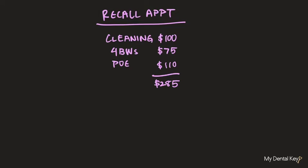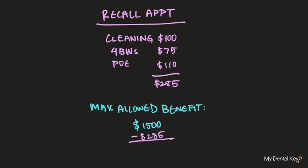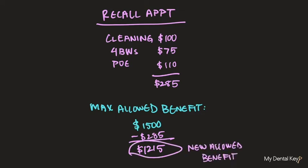These prices come from the prices that the insurance sets in their contract with an office. This $285 will then be subtracted from the maximum allowed benefit of $1,500, leaving that patient with $1,215 left on their maximum benefit for further treatment for the rest of that benefit period. The numbers used here are arbitrary for the sake of explaining how a maximum works, but we'll go over the details of insurance fees in a future video.